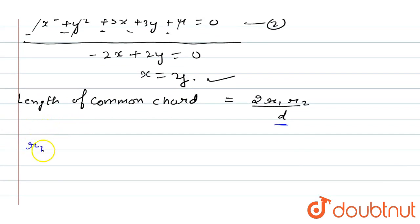In the next step, since the chord is common, the radius will also be common. So r1 equals r2.